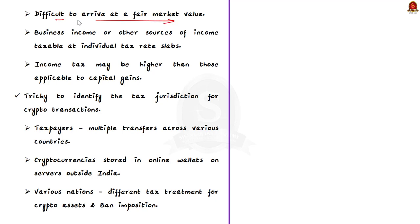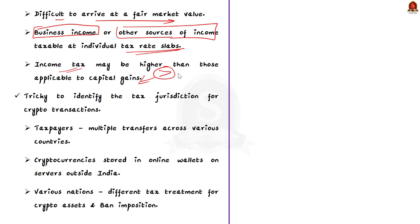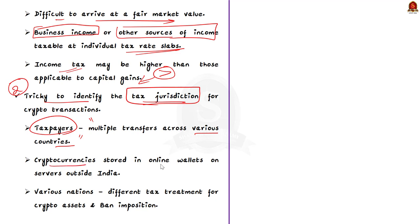There are divergent views in the market in treating such income as business income or other sources of income, which are taxable at individual tax rate slabs because the income tax may be higher than those applicable to capital gains. The second challenge is that it is often tricky to identify the tax jurisdiction for cryptocurrency transactions, because taxpayers may have engaged in multiple transfers across various countries and the cryptocurrencies may have been stored in online wallets on servers outside India.